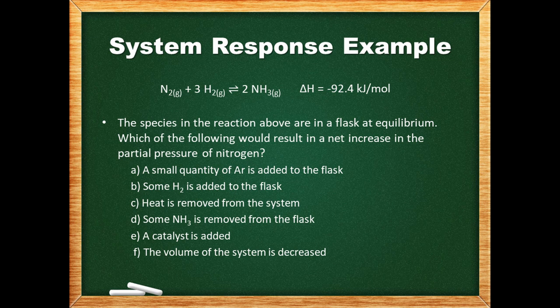To tie together the concepts we've covered, consider this question: nitrogen, hydrogen, and ammonia are in a flask at equilibrium — which of the following would result in a net increase in the partial pressure of nitrogen? Adding an inert gas such as argon will not disrupt the equilibrium, nor will it change any of the partial pressures. Adding hydrogen will shift the reaction right, which would decrease the amount of nitrogen and its partial pressure.